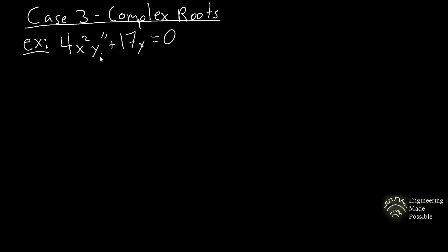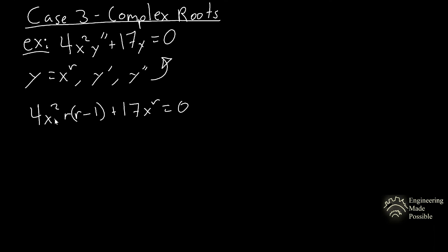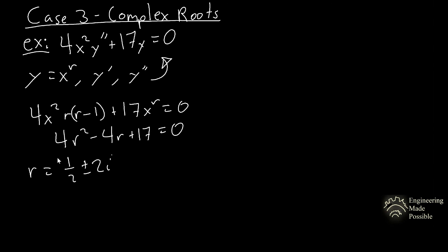For case three — complex roots — the equation is 4x squared times y double prime plus 17y equals zero. Assume y equals x to the r, get the derivatives, and plug in. After simplification the characteristic equation is 4r squared minus 4r plus 17 equals zero. Using the quadratic formula gives r equals one-half plus or minus 2i, so alpha equals one-half and beta equals 2.